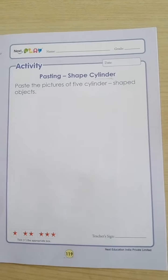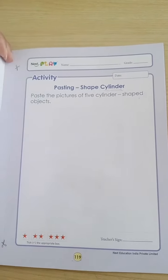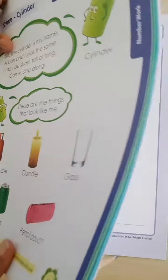We have to paste the picture of 5 cylinder shaped objects. We have seen which objects are cylinder shape. Previously we have studied, right?